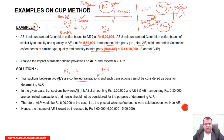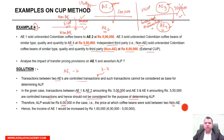In the given case, the transaction between AE-1 and AE-2 amounting to rupees 5 lakh, and the transaction between AE-3 and AE-4 amounting to rupees 5,50,000, are both controlled transactions and hence cannot be considered for determining ALP. Therefore, the ALP will be the external CUP of rupees 6 lakh at which the coffee beans were sold between two non-AEs. Since the ALP is rupees 6 lakh and the transaction price is rupees 5 lakh, the adjustment will be rupees 1 lakh added to the income of AE-1.